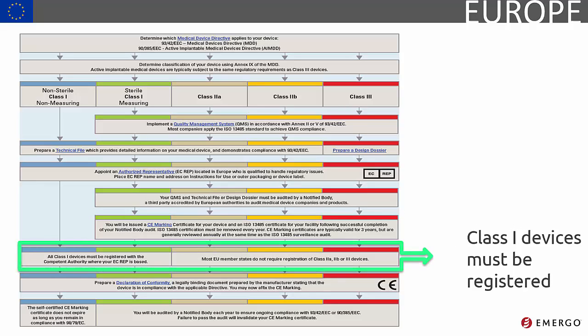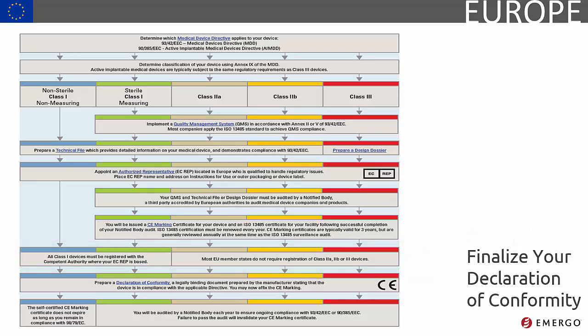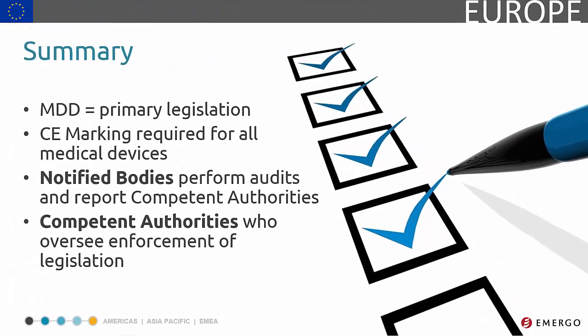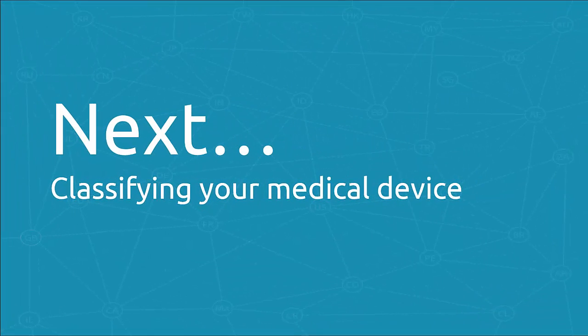All Class 1 devices are required to be registered. Some competent authorities require Class 2 and Class 3 devices to be registered as well. The last step is to sign your Declaration of Conformity. In this introductory module, we learned how the medical device directives are the main legislation in Europe used in the CE marking process and that all medical devices require CE marking. We also know that notified bodies audit your company for compliance and report their findings to the competent authorities. The next section delves a little bit deeper into the device classification process.